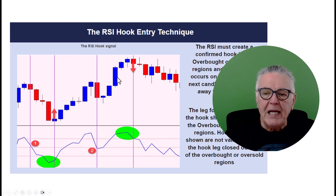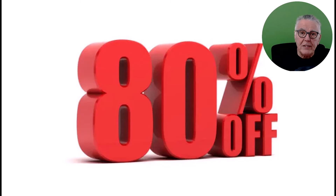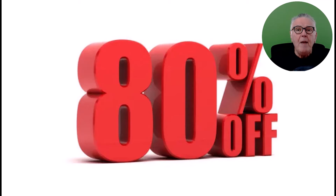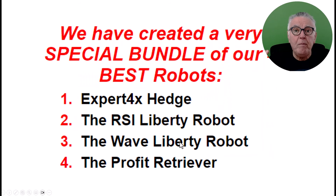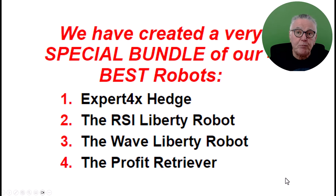Using the RSI Liberator all of this is fully automated, so you don't have to worry about watching the charts. You can see the beautiful trends that these signals catch. The RSI Liberator sells at full price of $1,200, but YouTube subscribers get 50% off that price. There's also an even better special — an 80% bundle discount on our most powerful EAs: the Expert Forex Hedged EA, the RSI Liberator, the Wave Liberator, and the Profit Retriever.